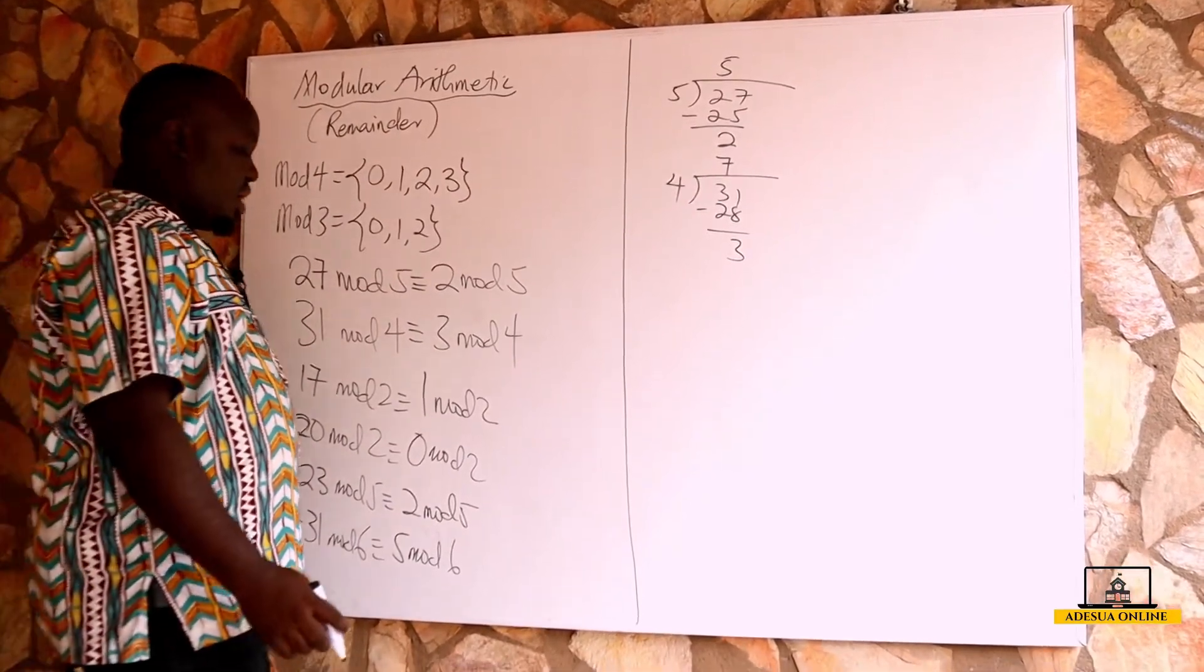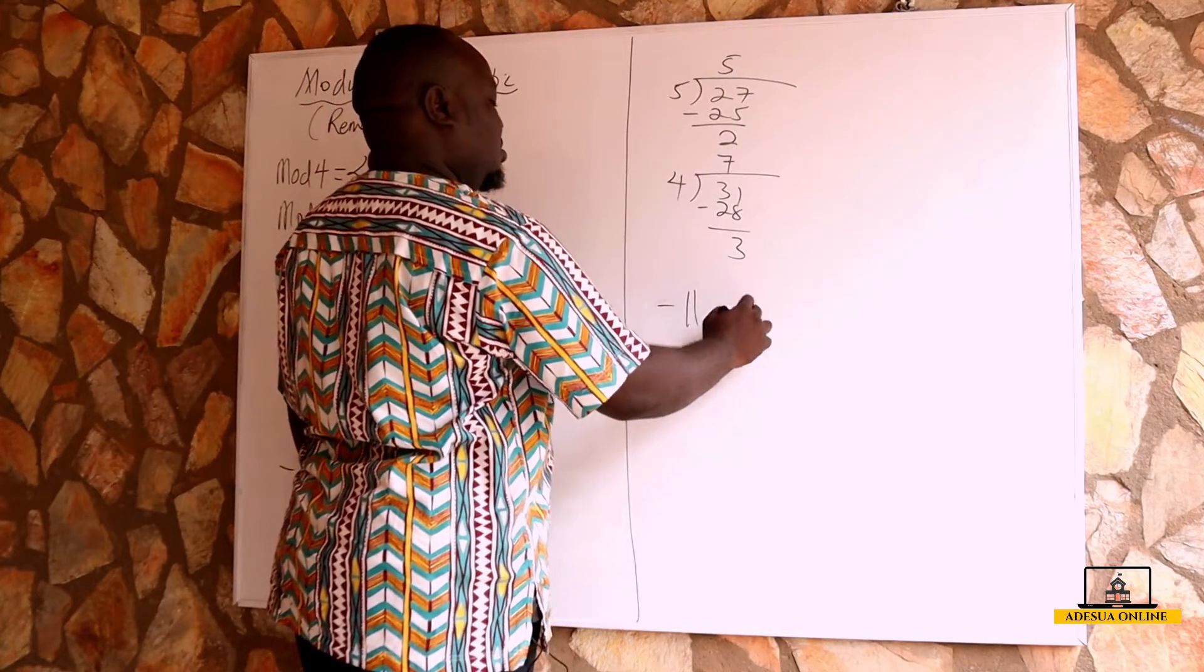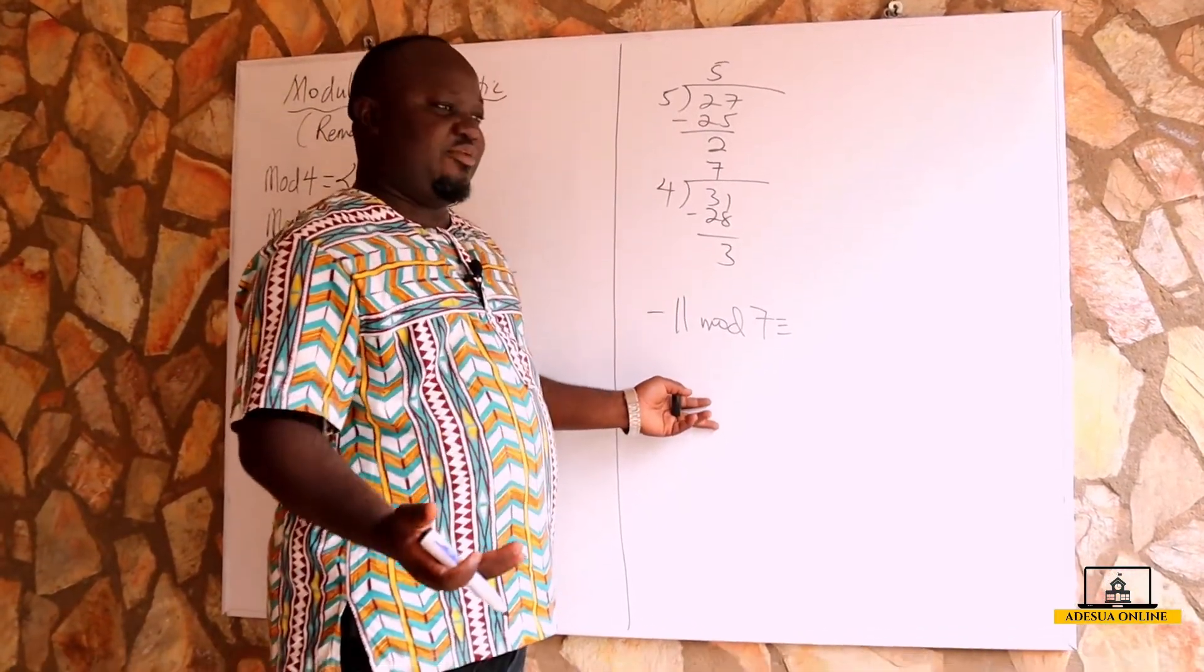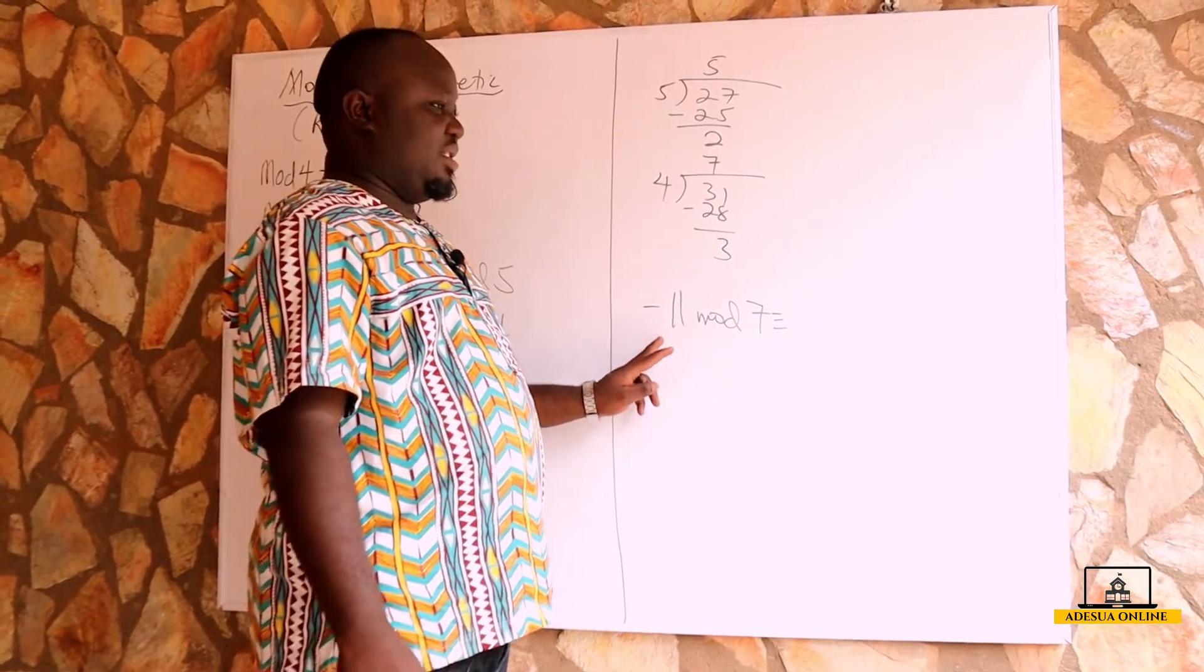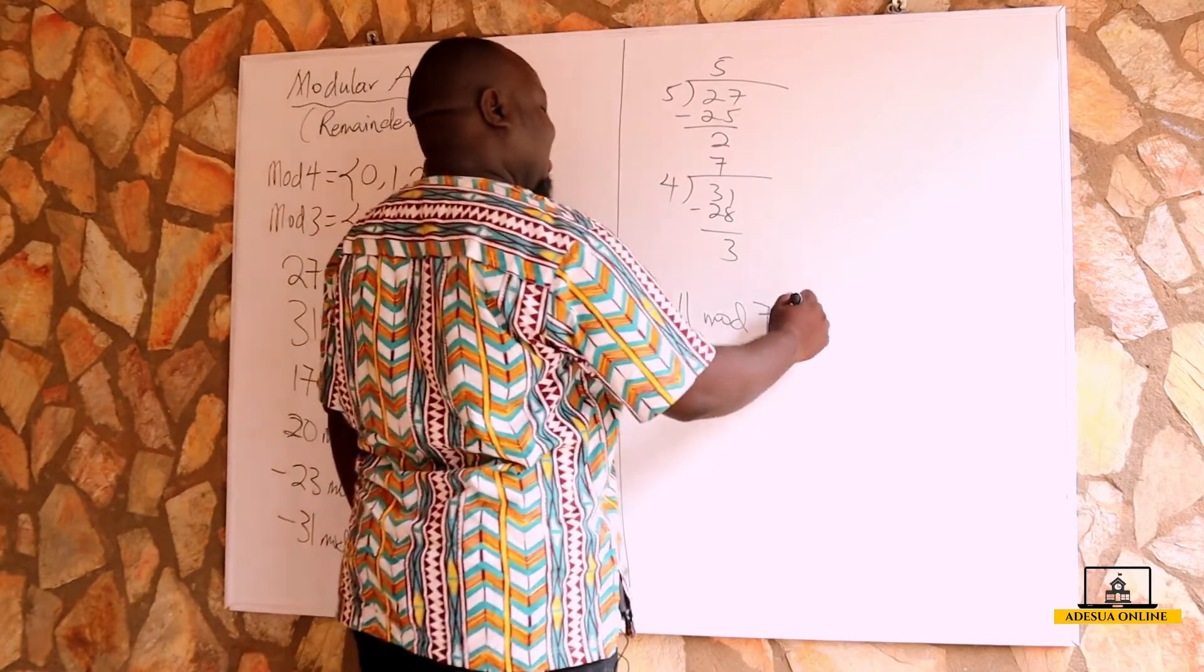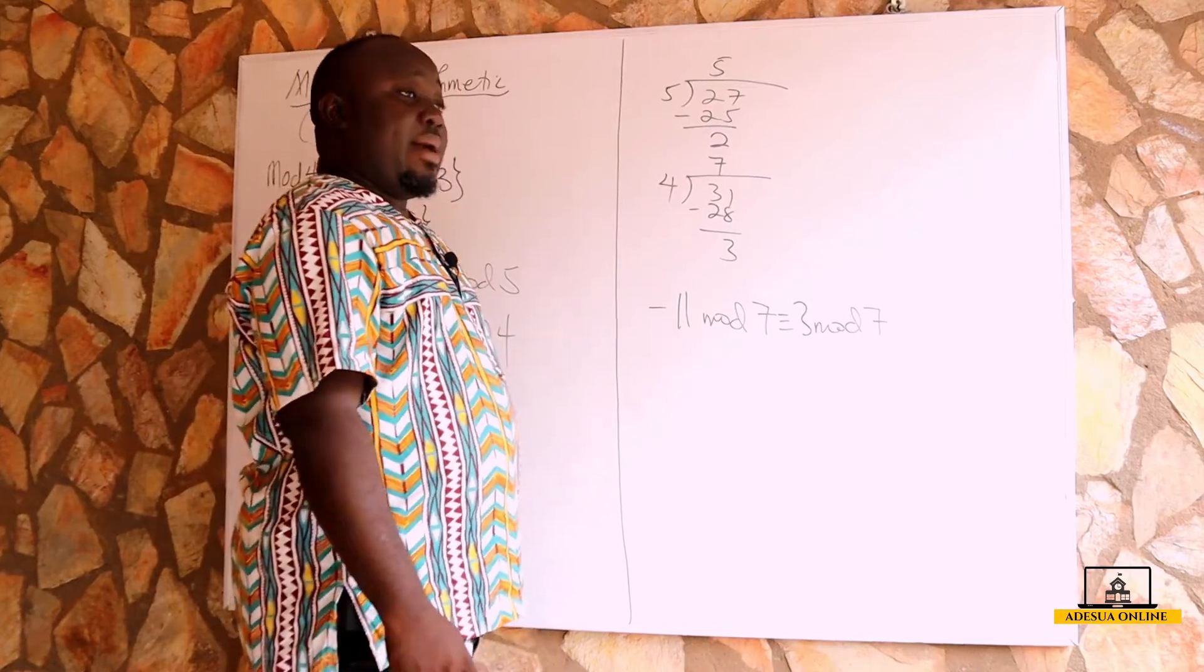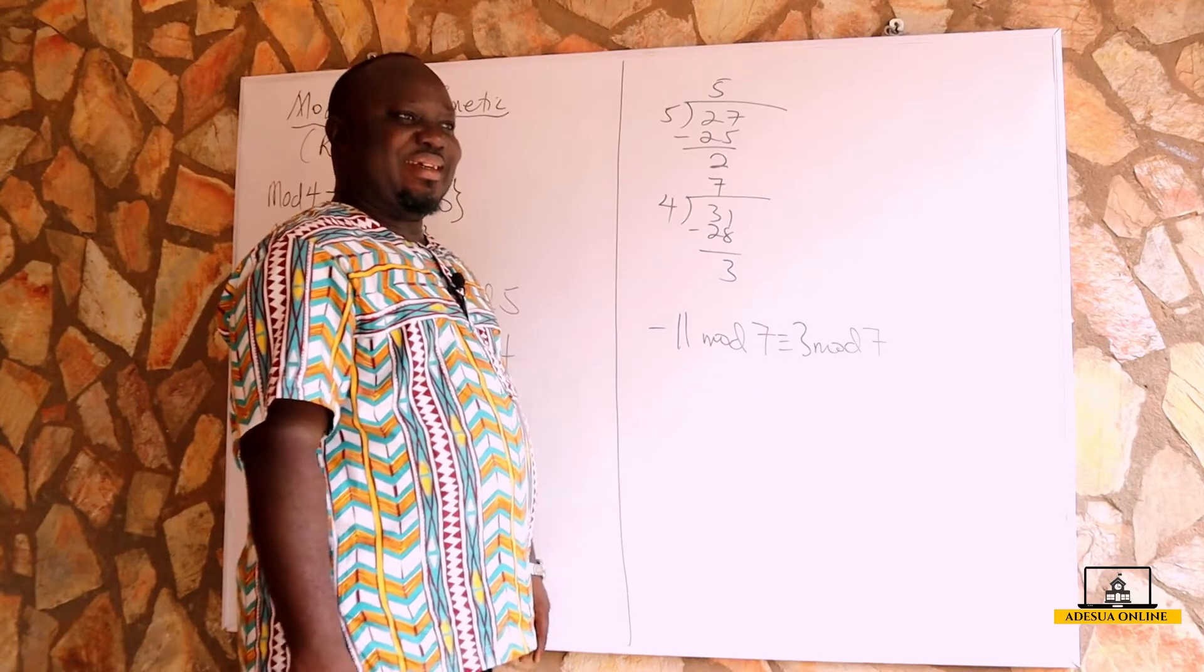For the negative numbers, we can also have -11 mod 7. So we go for multiples of 7: 7×1=7, 7×2=14, and 14 is greater than -11. So we have 14 minus 11 to be 3. This will give us 3 mod 7.